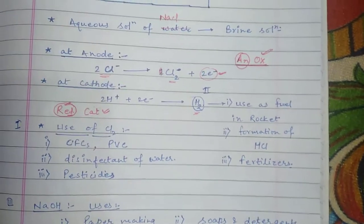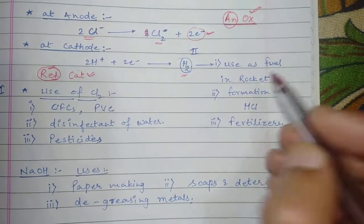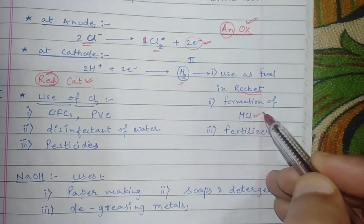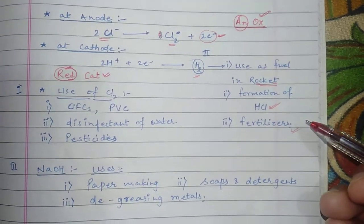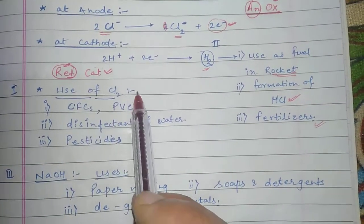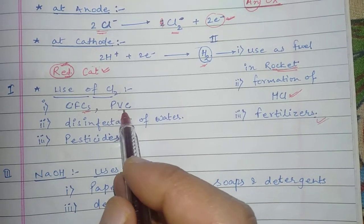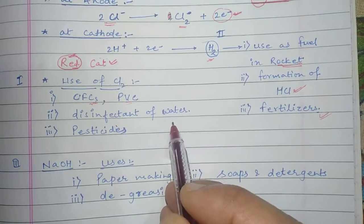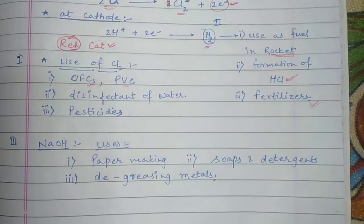Hydrogen is used as a fuel in rockets, in the formation of HCl, and in the formation of fertilizers. Chlorine gas is used for the formation of chlorofluorocarbons, polyvinyl chloride, as a disinfectant for water, and in the formation of pesticides.